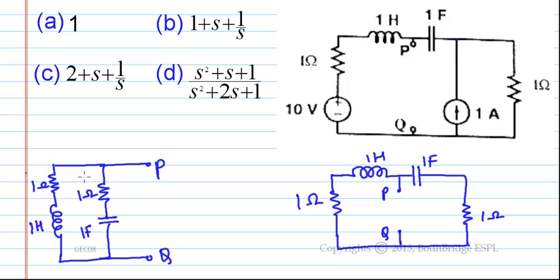Writing the frequency domain equivalence of these components: for the resistors we will have the same 1 and 1, but for 1 Henry we will have s, and for 1 Farad we will have 1 by s.